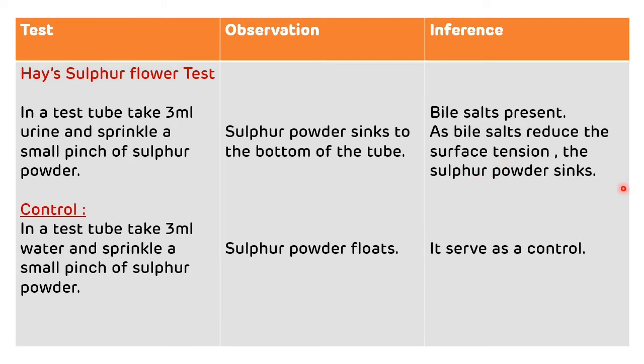In the second test tube, which serves as a control, take 3 ml of distilled water and sprinkle a small pinch of sulfur powder. In the control, the sulfur powder floats. That is the procedure, observation, and inference of the Haze Sulphur Flower test.